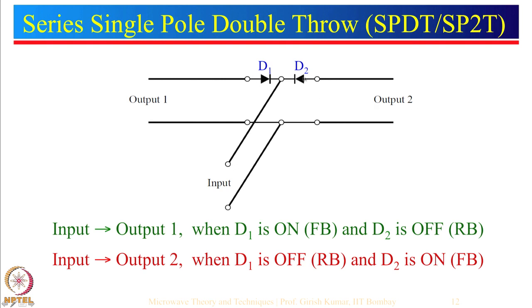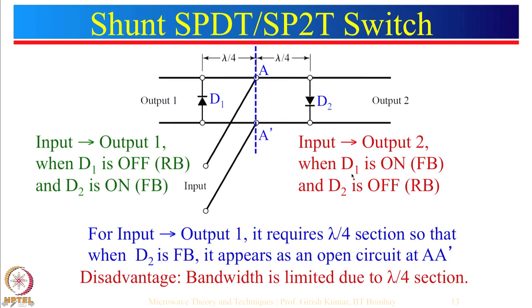If both diodes are off, everything reflects back to the input side. When we want to send input to output 2, D2 should be forward biased and D1 reverse biased. Now let us look at an alternate way of realizing the same SPDT using shunt configuration. Here diodes D1 and D2 are connected in shunt configuration, with an additional lambda-by-4 line length on each branch.